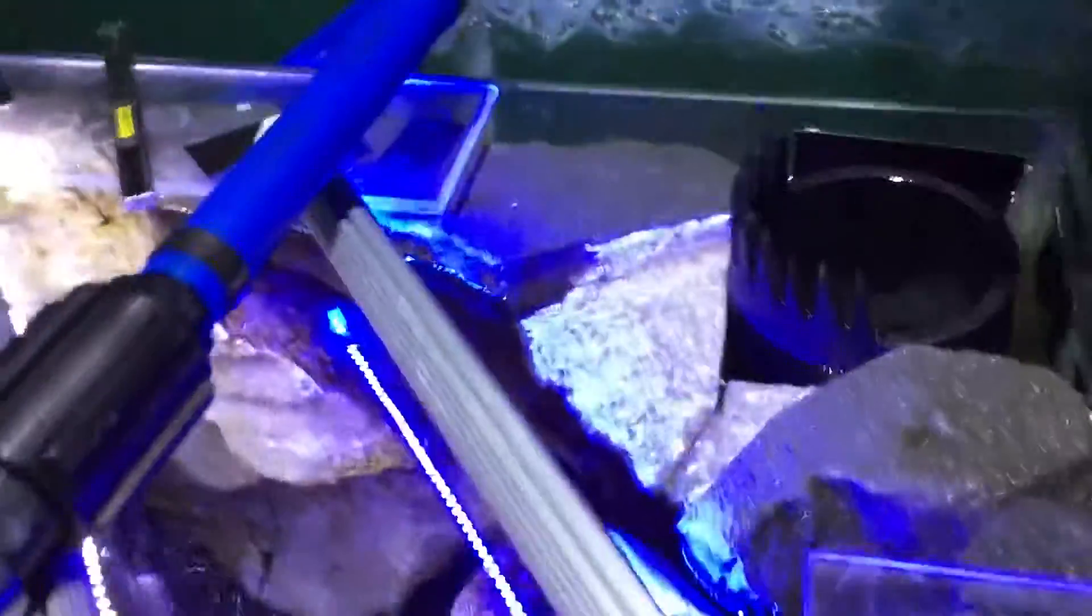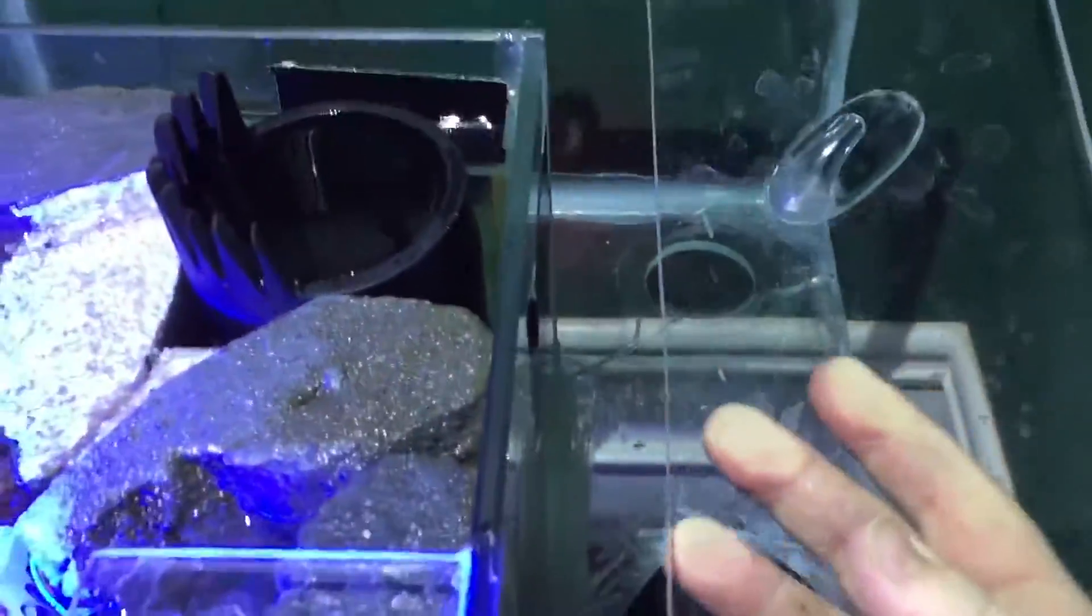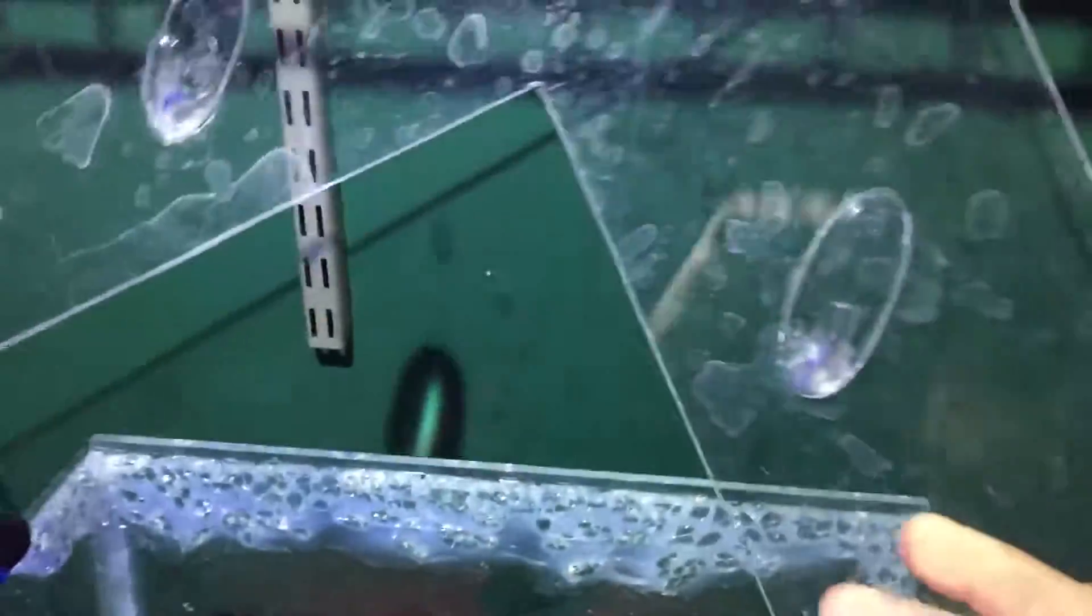One over there, one right there, and one right here. Essentially this is a ghost overflow and it's shaped just like this shape that you see.